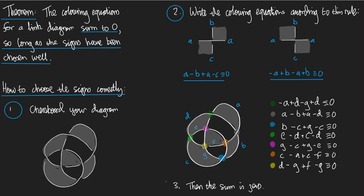Let's check that the sum of the equations is indeed zero. Looking at the A's: we get minus one, plus one, plus one, minus one — that gives zero A's. For G: minus G plus G plus G minus G plus G minus G — that's minus two plus two, giving zero. All letters cancel.